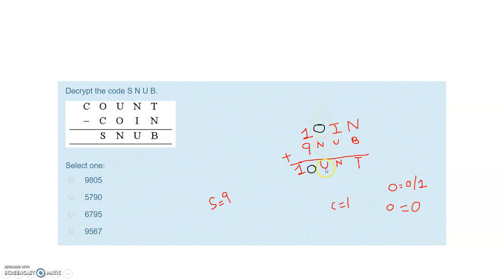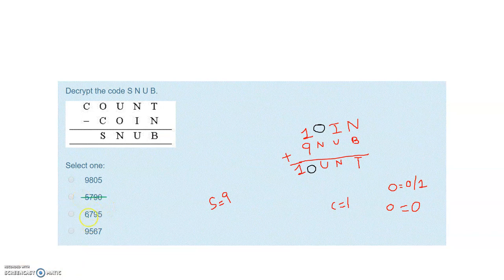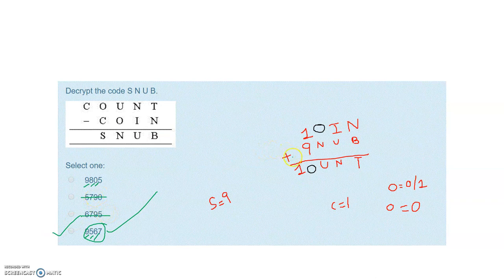Now checking the remaining options: in option 1 (9805), N=8 and U=0, but U=0 is already taken by O — invalid. In option 4 (9567), N=5 and U=6. Checking: 5+1=6, which satisfies N+1=U. So the answer is 9567, which is option D.